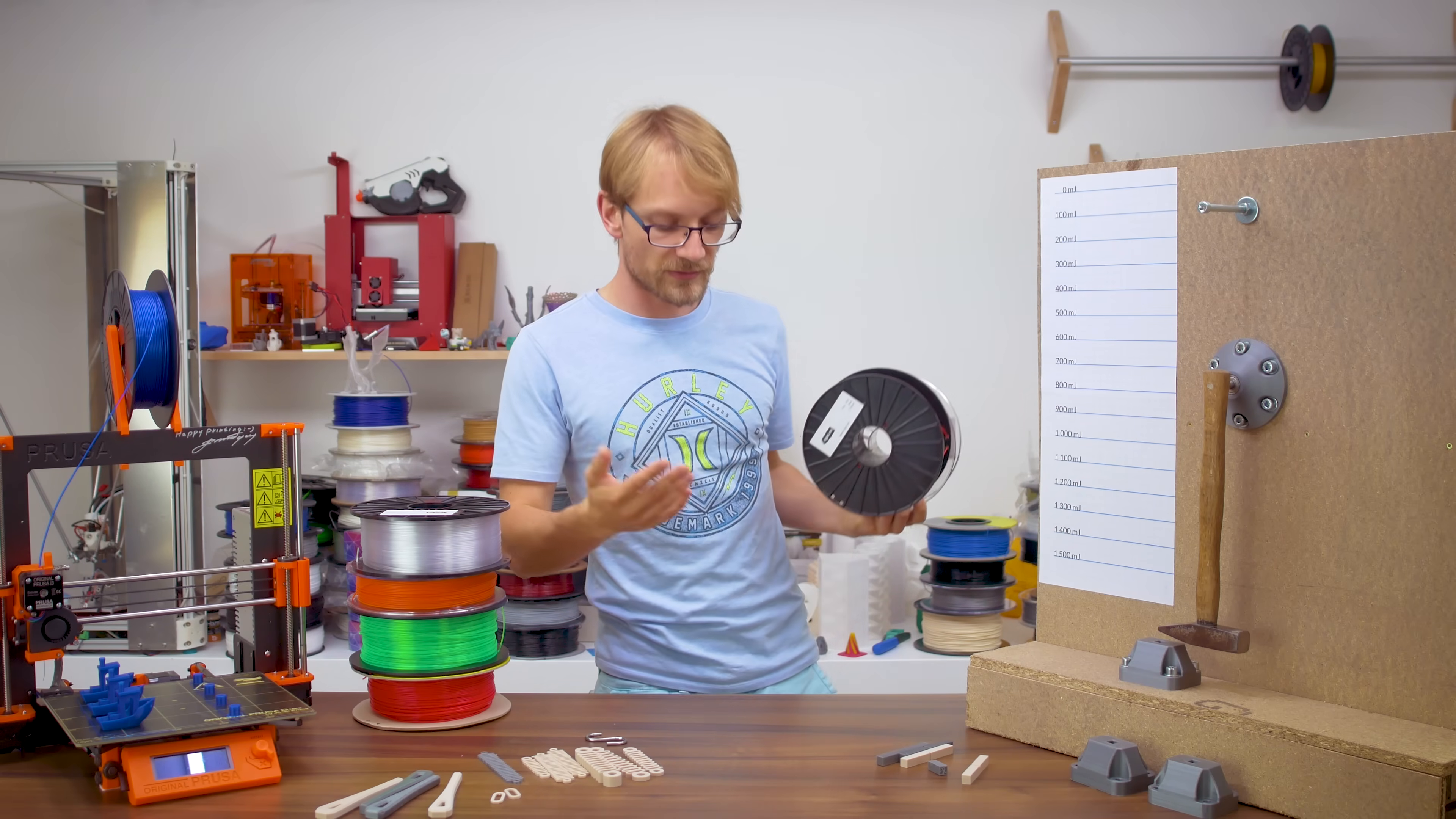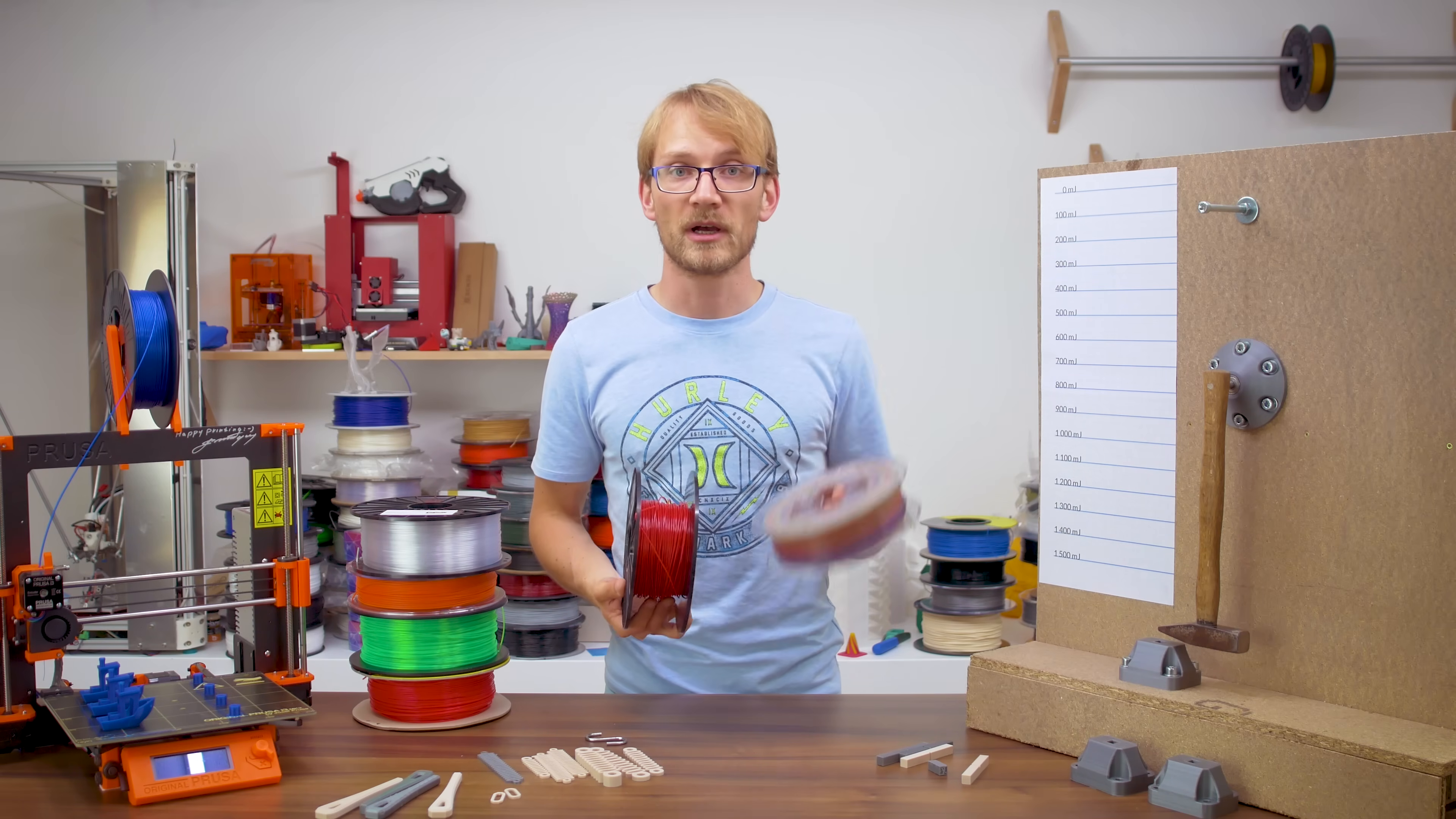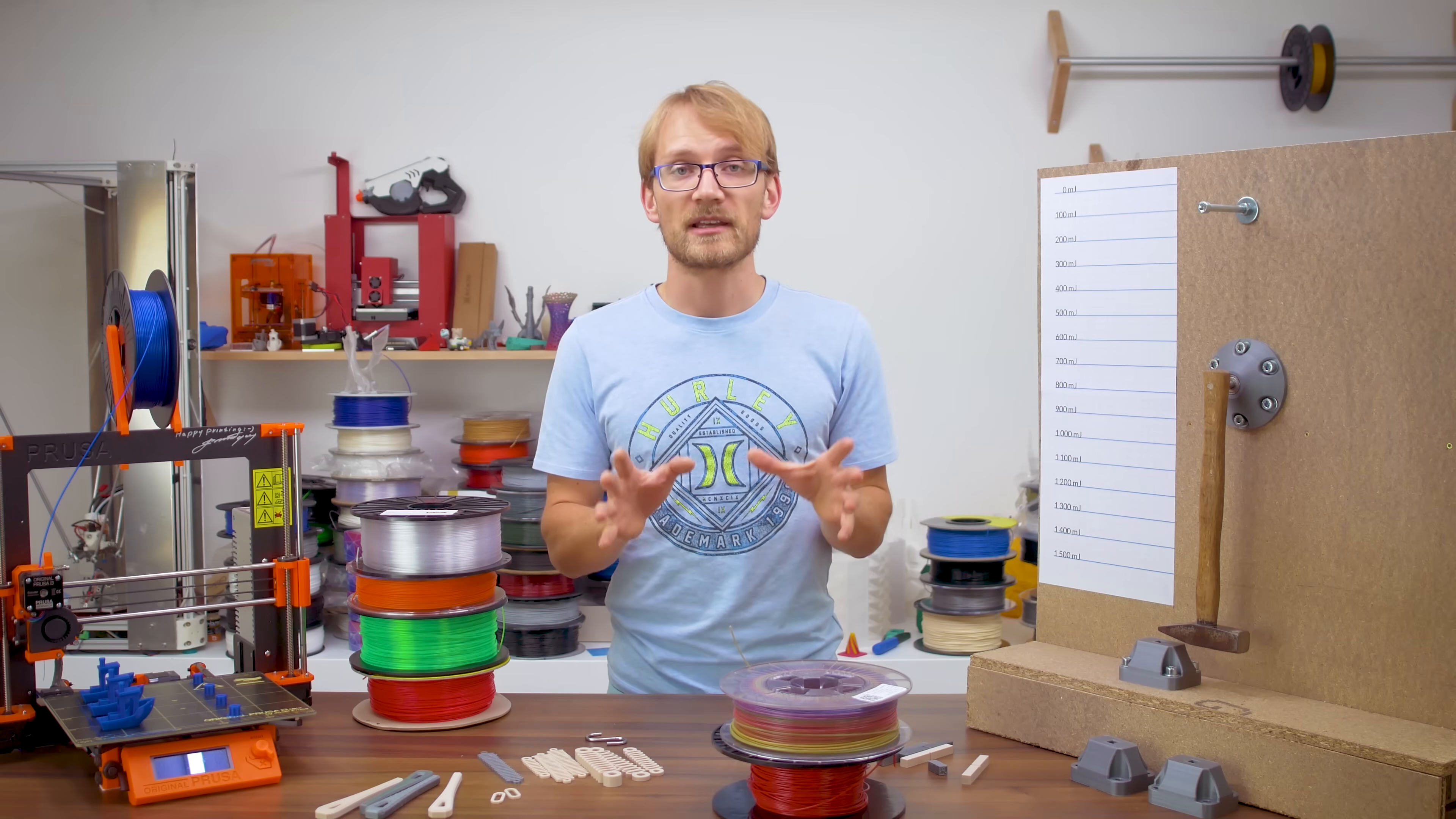So, as a baseline and sort of as a reference of what to expect, here is how some previous materials would score. Rigidink's ASA and the Unico fill rainbow would both get the flaming 5 star for print quality, both print really well, and the rainbow PLA has an awesome look to it on top of that.